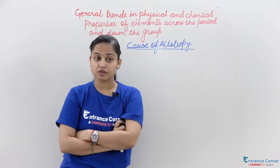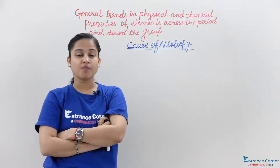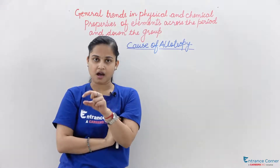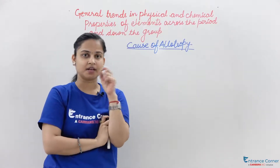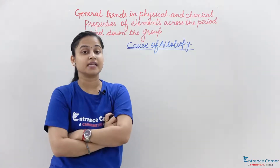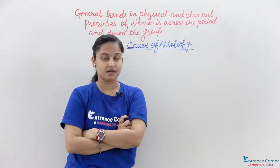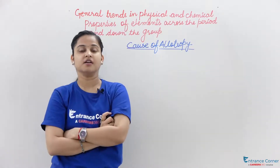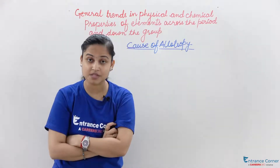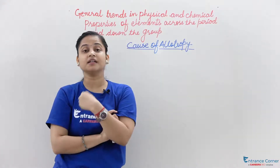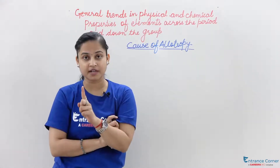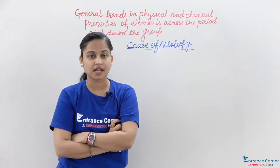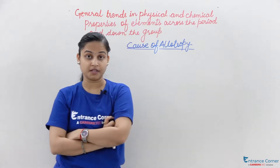Allotropes are forms of an element that exist in the same state but they have different properties because of their atoms that are arranged differently.